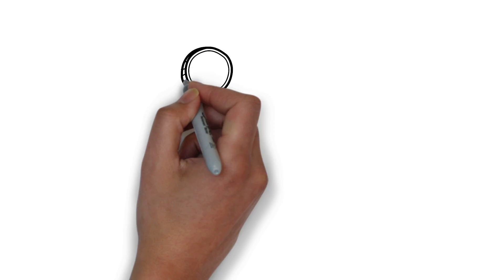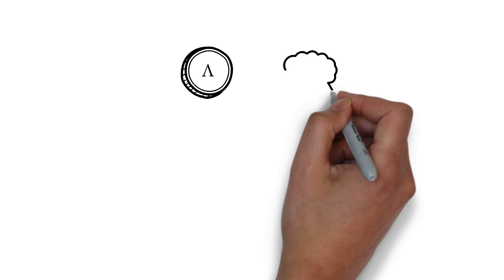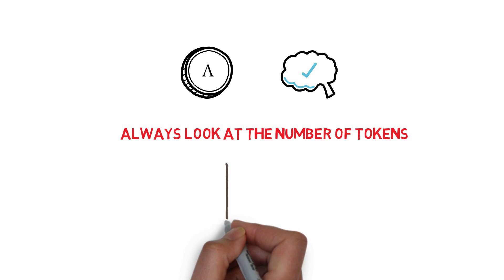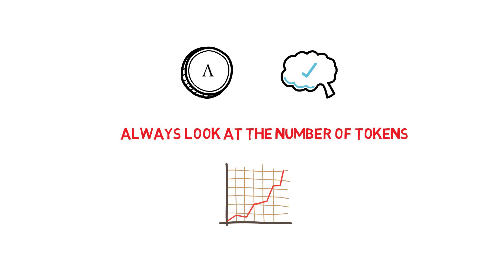When it comes to the Ample tokens, the main thing to remember is to always look at the number of tokens in addition to the price to see the full picture of your portfolio.